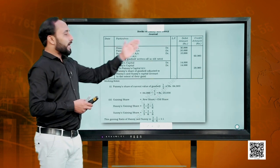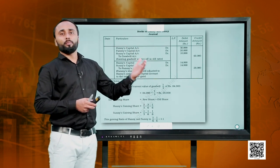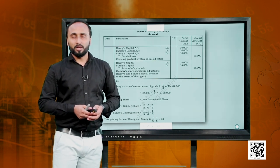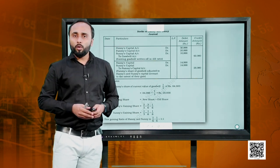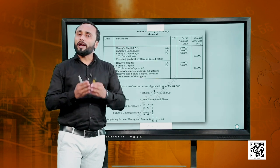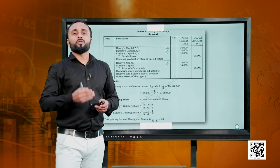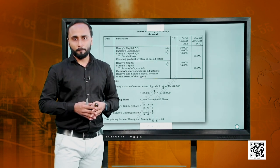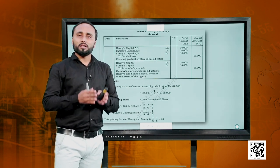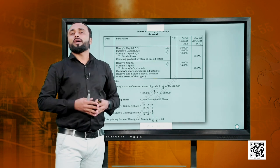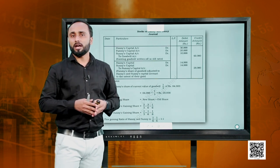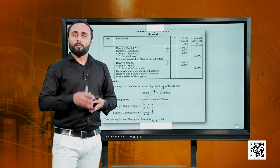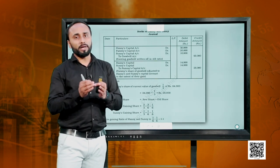So this is what we do when there is an existing goodwill: we first write off that goodwill and then we make the entry for the newly valued goodwill. Sometimes there might be a case when we are not given the amount of goodwill explicitly — a case where the goodwill might be hidden. But in this chapter, hidden goodwill is pretty simple.